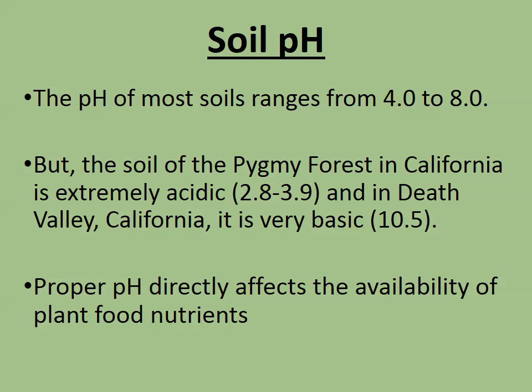For pH, most soils range from 4 to 8. The soil of the Pygmy Forest in California is super acidic, and in Death Valley, California, it's super basic. Those are extreme cases, but you still have plants that live there. The happy medium for a lot of plants is around 6.5 to about 8.